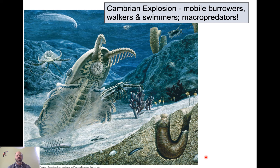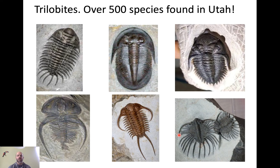One more example of how evolutionary arms races are manifested in the fossil record: during the Cambrian Explosion there was an explosion in burrowers, walkers, swimmers, and macro predators. Trilobites are some of the most famous examples. You've probably heard of trilobites — perhaps the most famous fossil in the world aside from dinosaurs. What you might not know is that there are hundreds and hundreds of species of trilobites; it's not just one or a few. They were incredibly diverse.